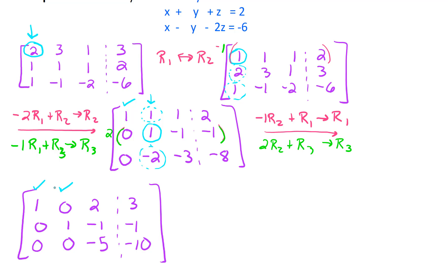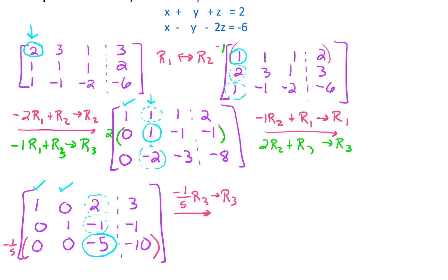Now we're working on the third row, third column — we want that to be a leading one, then get zeros for all other entries in that column. We're pretty much out of other moves, so we are going to multiply by negative one fifth. But that's okay — we won't get any fractions. So we go negative one fifth times row three and put the result in row three, giving us zero, zero, one, two.